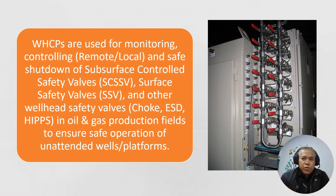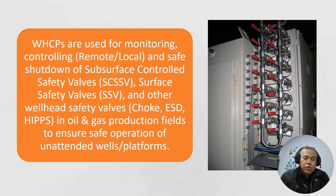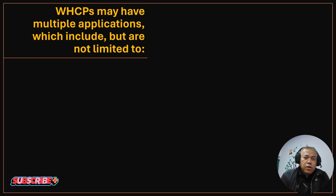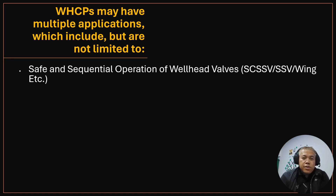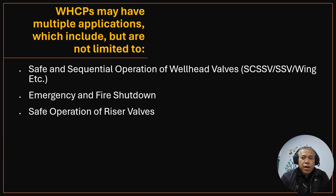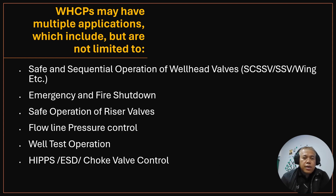The wellhead control panel is connected to our safety valves, wing valves — surface safety valves — and we also have choke valves and HIPS. This is the oil and gas production field. To ensure safe operation of unattended well platforms, because our wellhead is an unmanned platform, we need remote control. Wellhead control panel applications include safe and sequential operation of wellhead valves and wing valves, and emergency and fire shutdown.